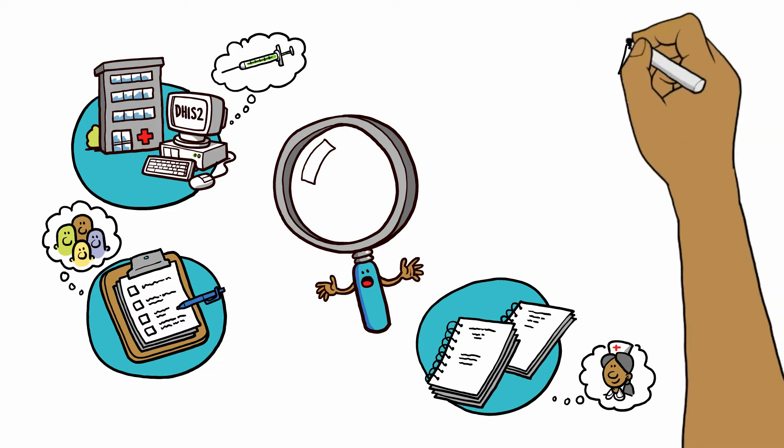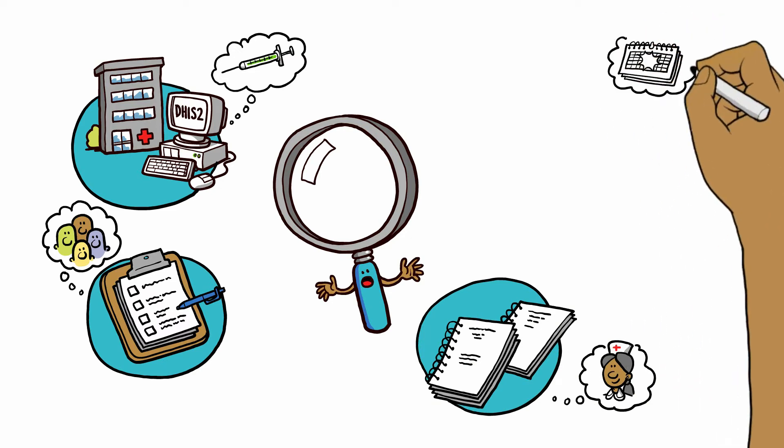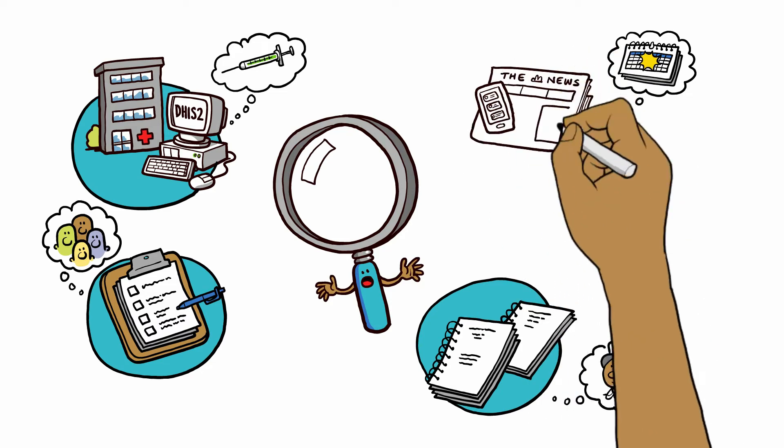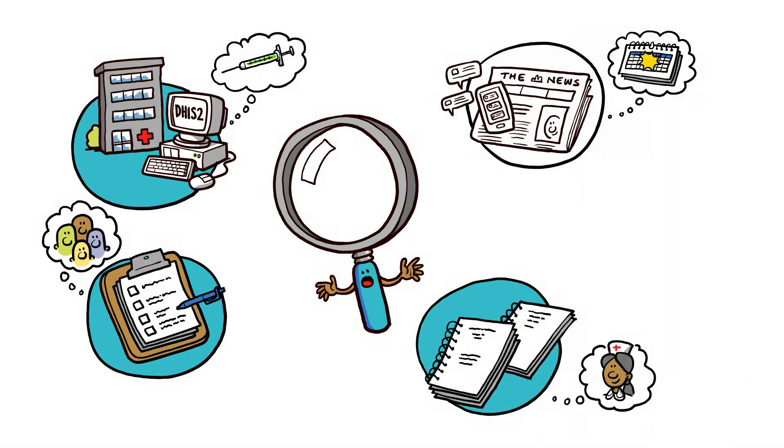We should also investigate events or local context that could be related to the outbreak. For example, was there a rupture in vaccine supply, or new policies implemented. This information can be found in local health program reports, newspapers or social media.